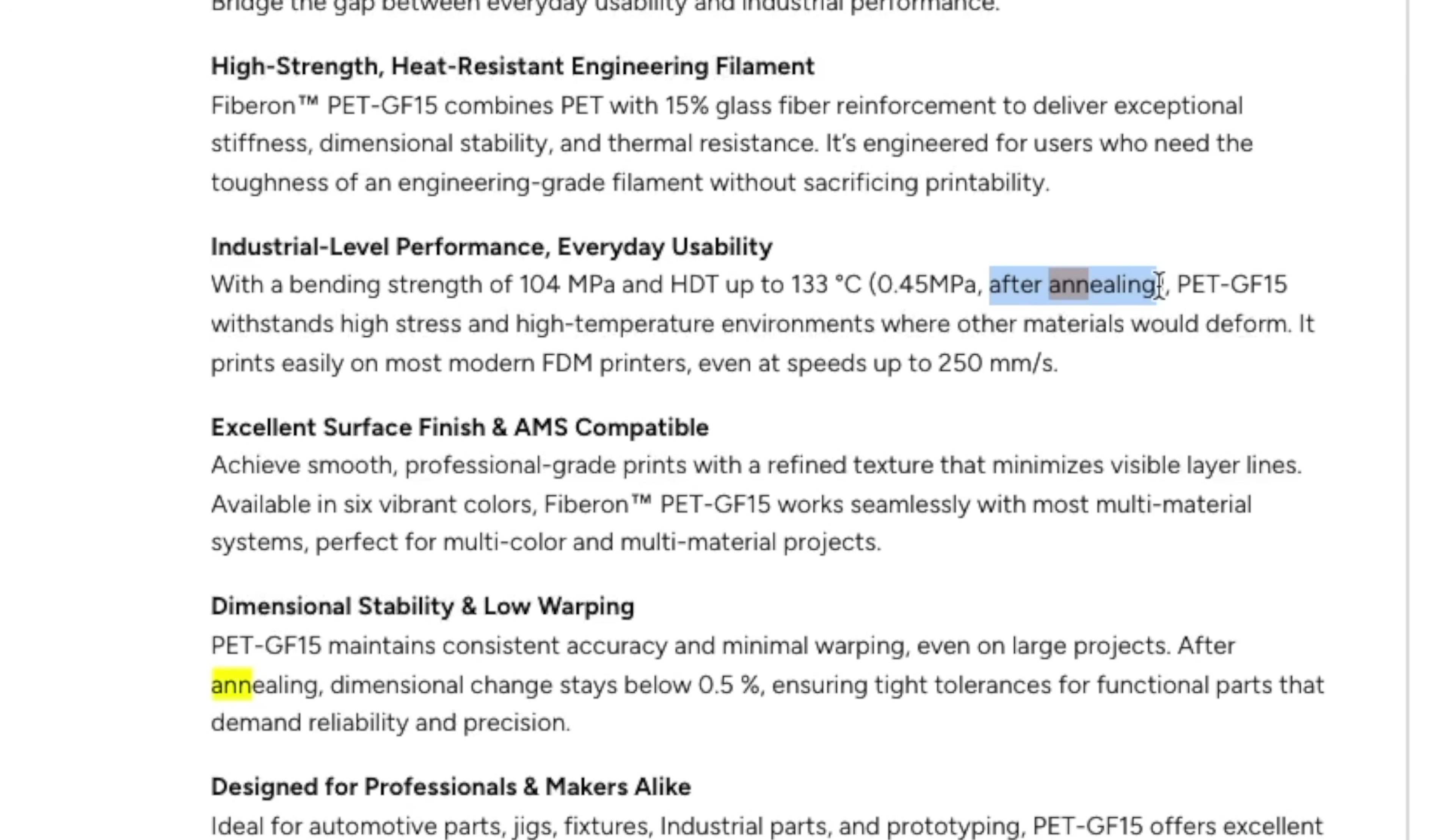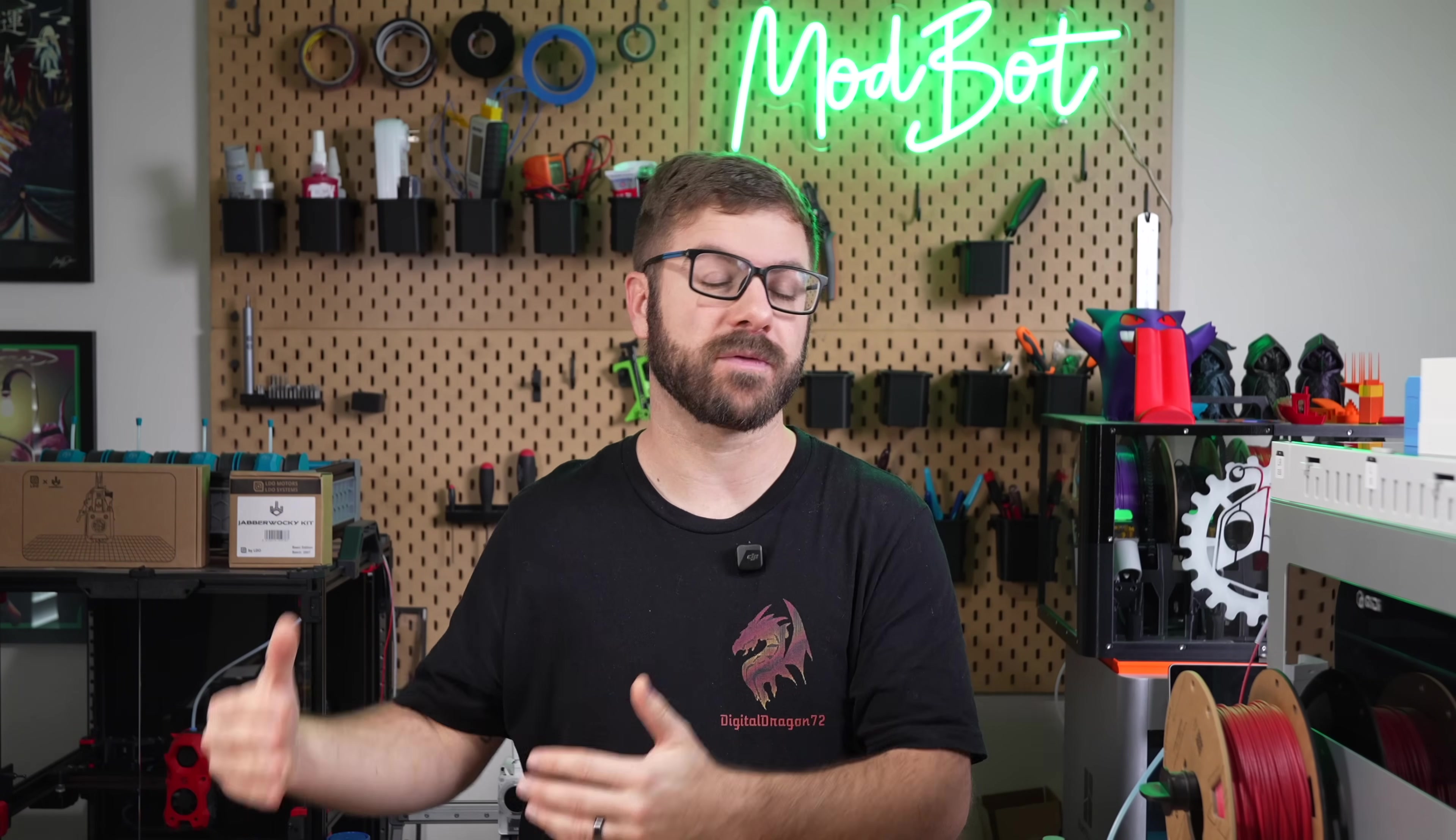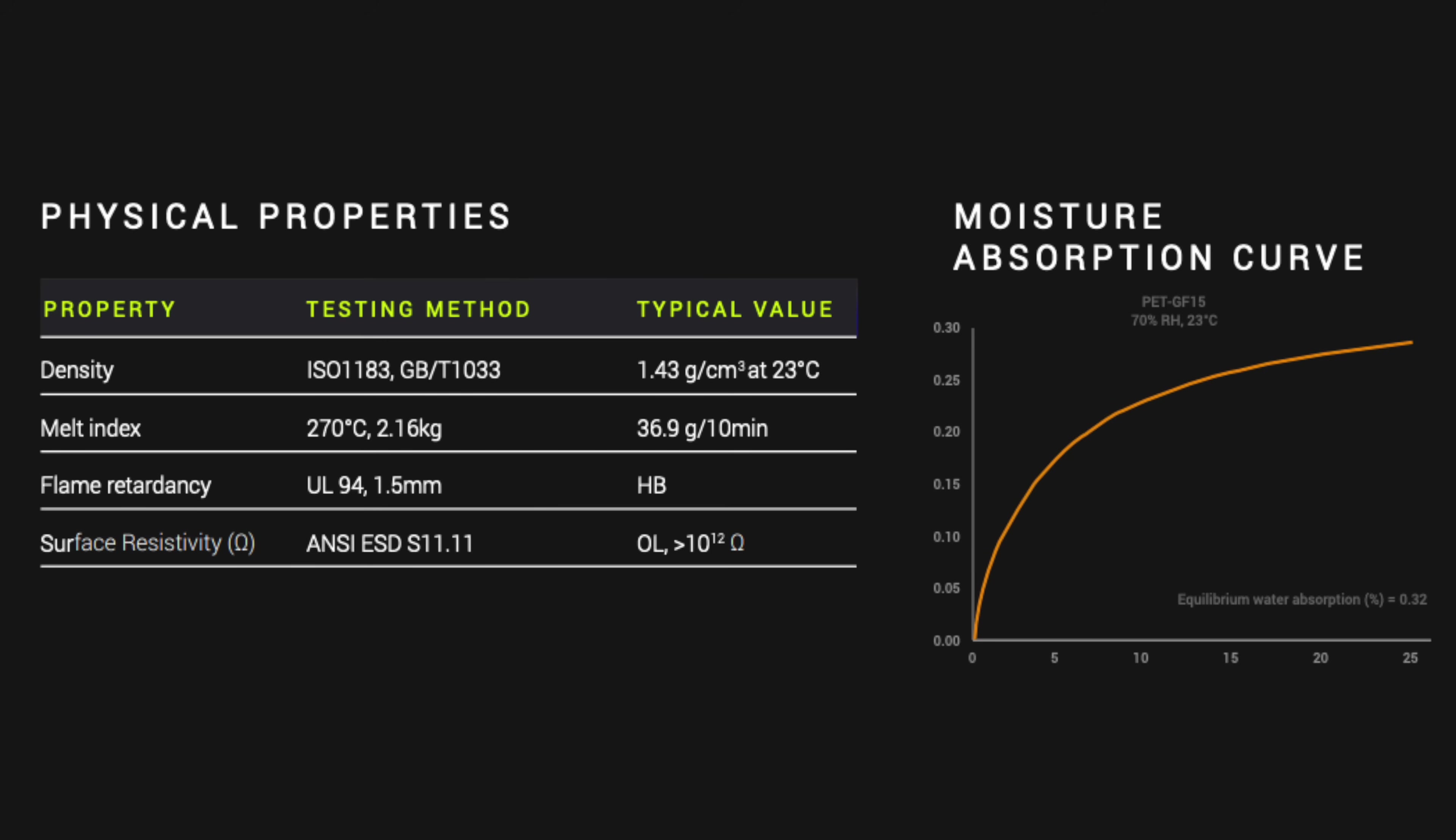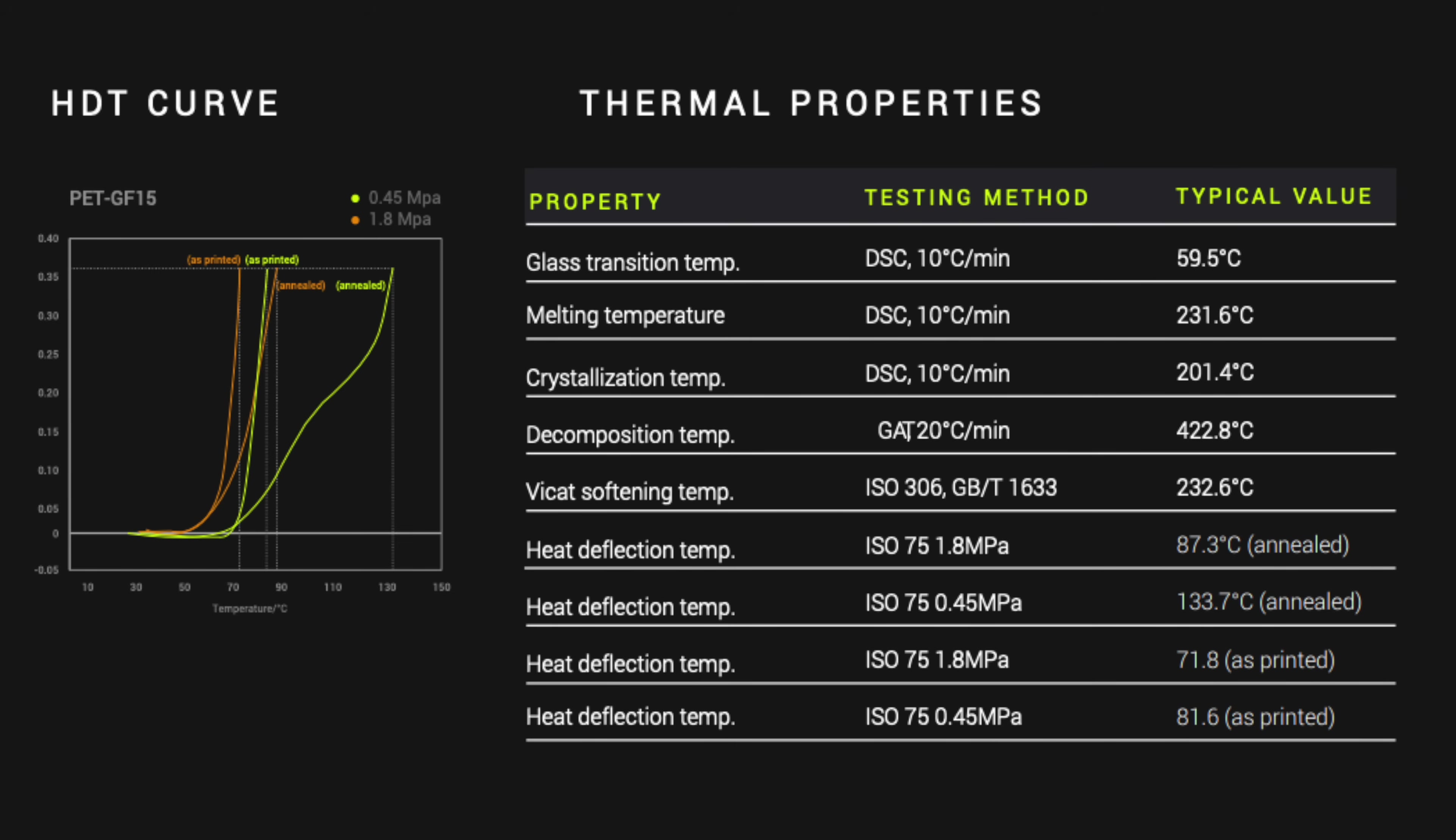On the other hand, annealing is mentioned twice right under the product image on Polymaker's website as well as in the TDS directly under the testing data. I greatly appreciate this transparency and wish it was the way that all filament manufacturers provided their data. I'll have the TDS info available on screen so that you can take a look at it and pause the video if you want to, as well as a direct link in the description of this video so you can download it and take a closer look.